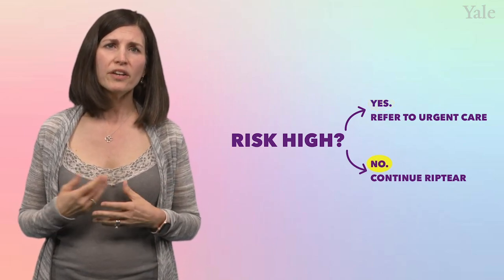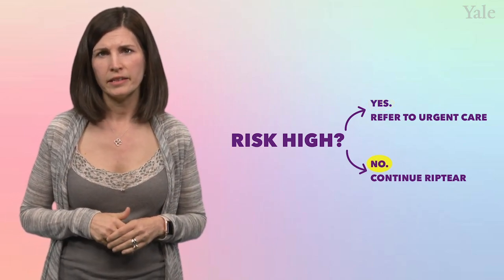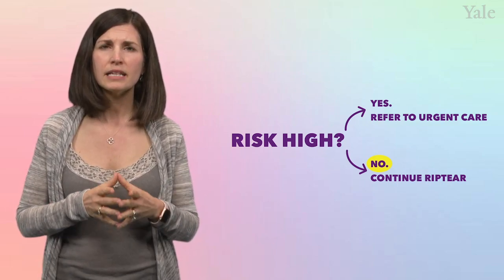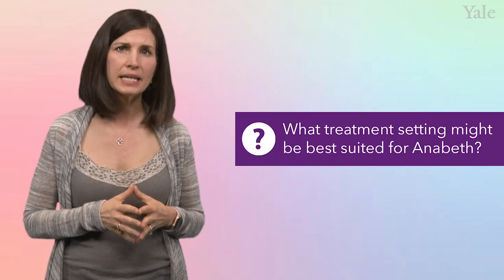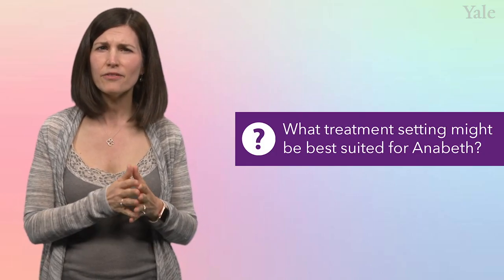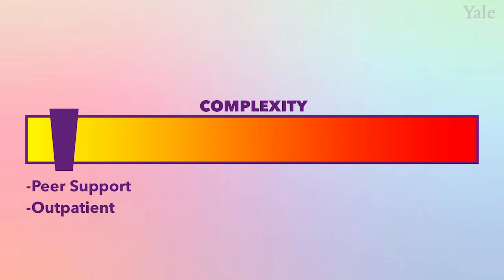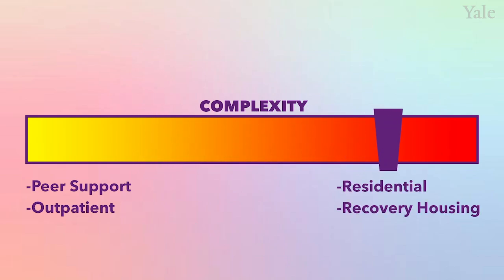But let's not stop here. What if Annabeth denied suicidality? What if she explained that she would never harm herself for religious reasons and also because of her family? Let's proceed with your rip-tear assessment. For all of these rip-tear responses, keep the question of what treatment setting might be best suited for her in the back of your mind. Think of this as a spectrum. If people are on the low-complexity end, then peer or outpatient treatment alone might be sufficient. But if the answers to rip-tear point to more severity or complexity, then you're going to think about residential treatment or long-term recovery housing.